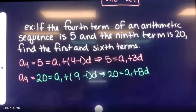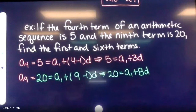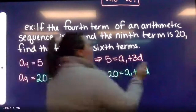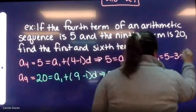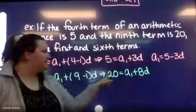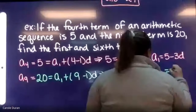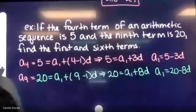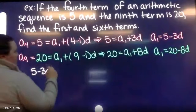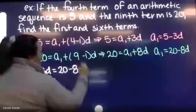Now I solve each equation for a(1). From the first: a(1) equals 5 minus 3d. From the second: a(1) equals 20 minus 8d. Since both equal a(1), I can set them equal: 5 minus 3d equals 20 minus 8d.